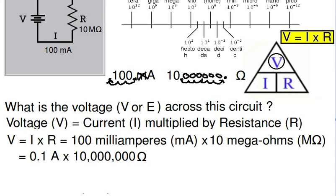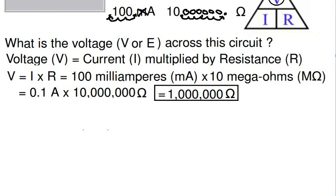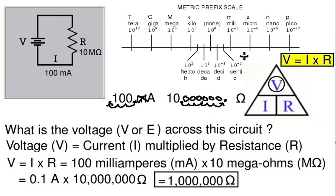Multiplying 0.1 times 10,000,000 gives us 1,000,000. The unit of the result is volts, so the answer is 1 million volts, which we can also express as 1 megavolt. So 1 megavolt is required to push 100 milliamperes of current through 10 mega ohms.